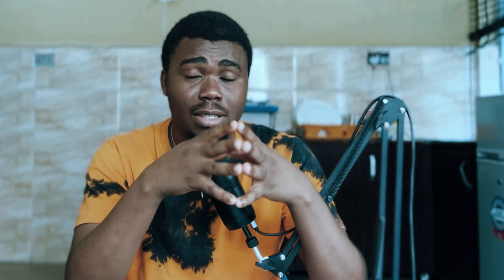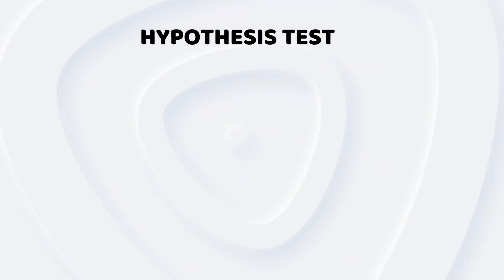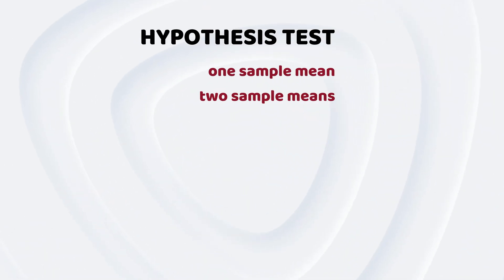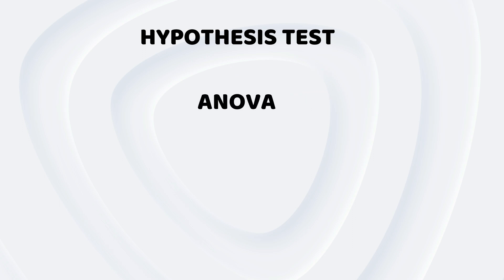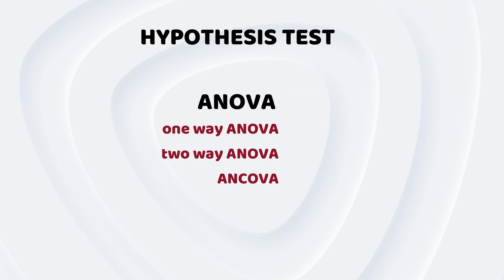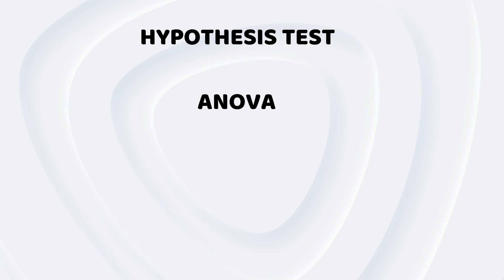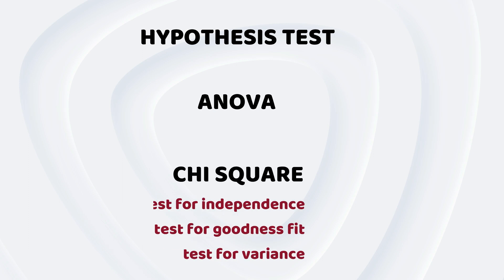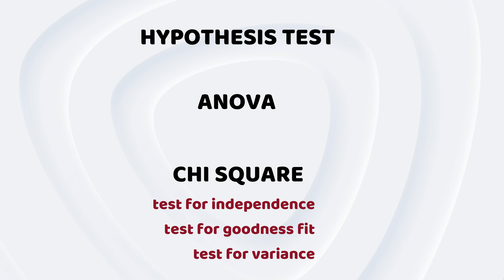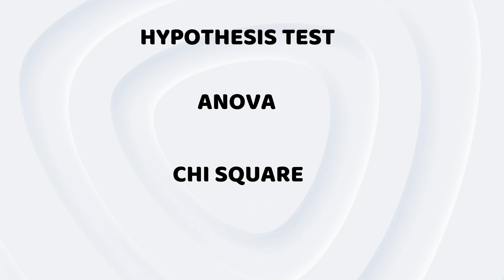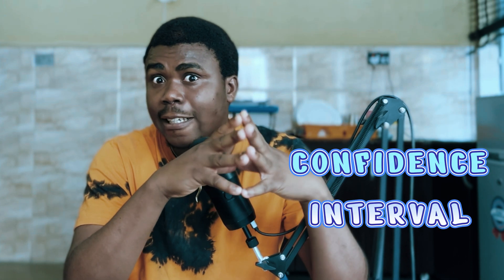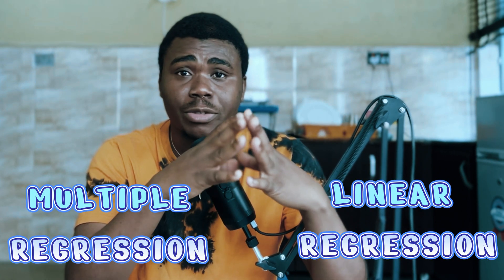Under inferential statistics, we have things like hypothesis tests — one-sample hypothesis tests and two-sample hypothesis tests. We have ANOVA, including one-way ANOVA, two-way ANOVA, and ANCOVA. We also cover the chi-square test for independence, the chi-square test for goodness of fit, and the chi-square test for variance. The concept of confidence intervals is also part of hypothesis testing, and we have regression — linear regression, multiple regression, and other types.